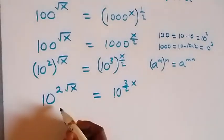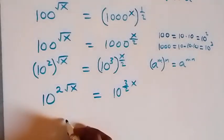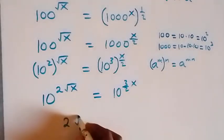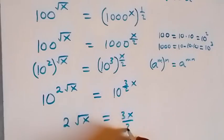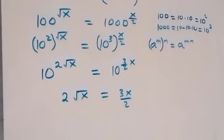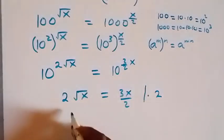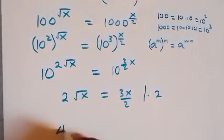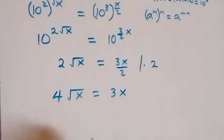From here, where we have the same base, we can equate the powers. So we have 2 root x equals 3x over 2. We then multiply both sides by 2 to clear the fraction, and this becomes 4 root x equals 3x.